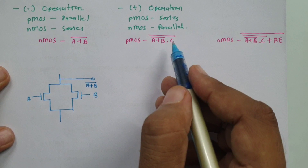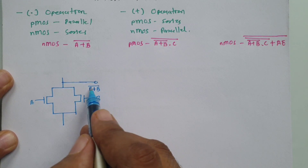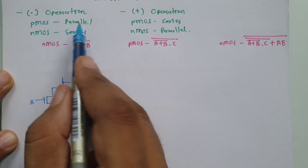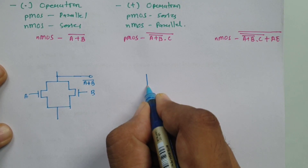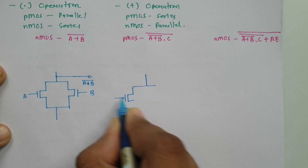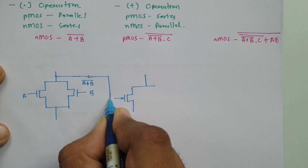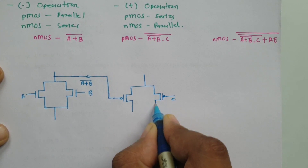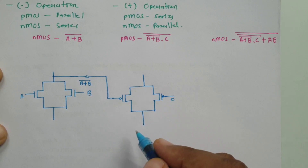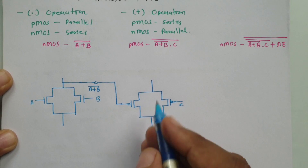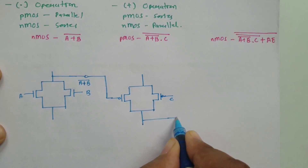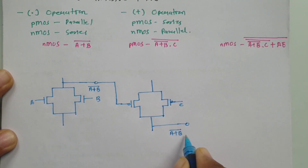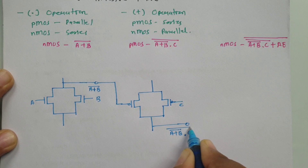Now we form the PMOS block where we already have (a + b) whole bar, and we need to perform dot c using PMOS. For a dot operation, PMOS is in parallel. So here one PMOS is connected with (a + b) whole bar, and the second input is c. In the PMOS block, we take output from the lower terminal, giving us output (a + b) bar dot c whole bar.